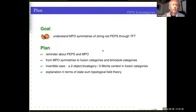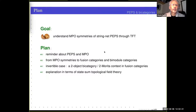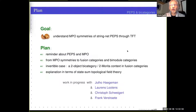What I will do is start with a short reminder about PEPS and MPO, partly repeating what Yas has already explained. Then I will tell you how to get from MPO symmetries to fusion categories and bimodule categories. And then in particular, in the situation where the bimodule category is invertible, describe a certain Morita context in fusion categories. This will be the first half of the talk. In the second half, I will try to explain how these results can be understood in terms of state sum topological field theories.